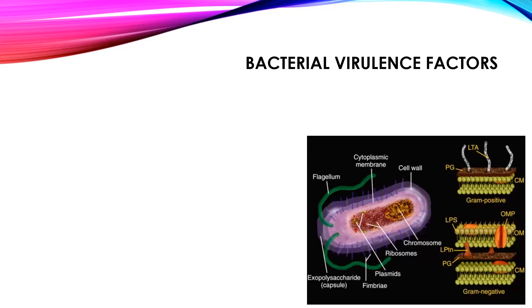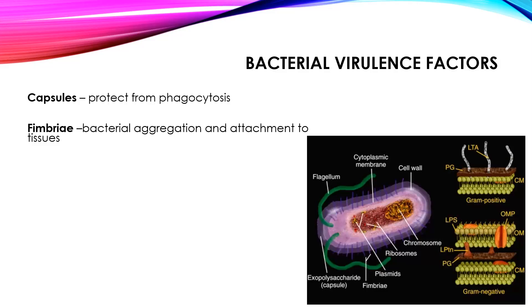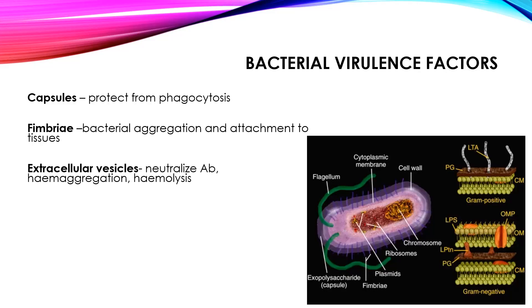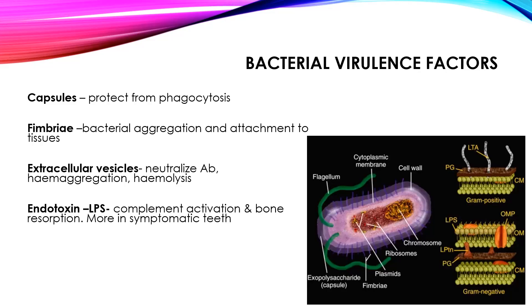How do these microorganisms infect the root canal and escape the host defense? The mechanisms by which they do this are known as bacterial virulence factors. One of them is the capsule, which protects the microorganism from phagocytosis. Fimbriae help many bacteria aggregate together and also help in attachment to tissues present in the root canal, such as the dentinal tubules, making them difficult to remove. Many organisms produce extracellular vesicles which are able to neutralize antibodies, cause hemagglutination and hemolysis, and hence escape the host mechanism.